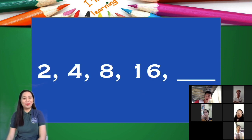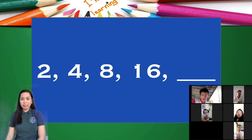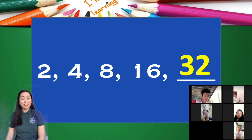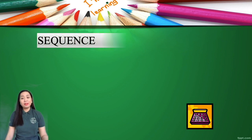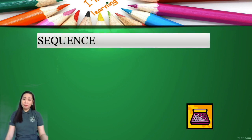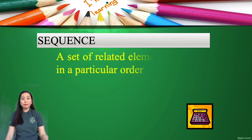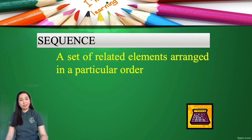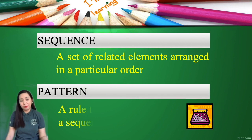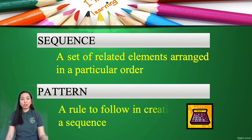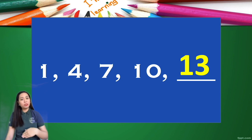Let's have the third one. What about 2, 4, 8, 16? The answer here is actually 32. And what we are actually doing is a sequence. When we speak of a sequence, we are referring to a set of related elements arranged in a particular order. That order is what we call the pattern — the rule to follow in creating our sequence.